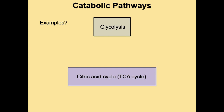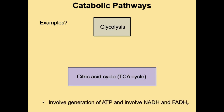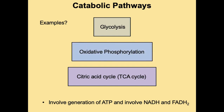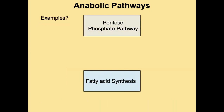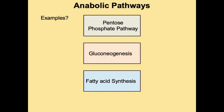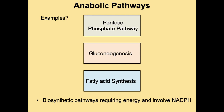Another example of a catabolic pathway is oxidative phosphorylation. These catabolic pathways involve the generation of ATP and also the molecules NADH and FADH2. Anabolic pathways include the pentose phosphate pathway which we're discussing today, but also fatty acid synthesis. These biosynthetic pathways actually require energy — they do not generate energy like catabolic pathways — and they involve a different electron carrier: NADPH. This is the same as NADH but with an extra phosphate group.